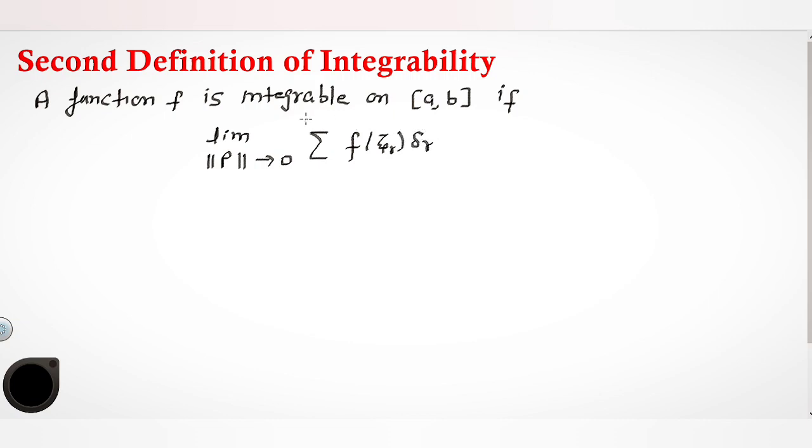If you take the norm of p tends to 0, the limit of summation f of xir delta r should exist and be independent of the choice of delta r and the point xir.